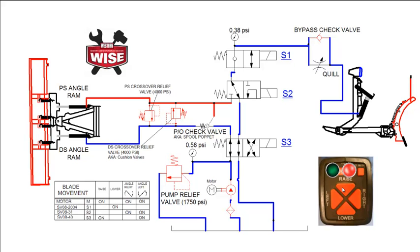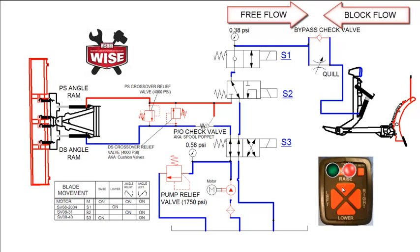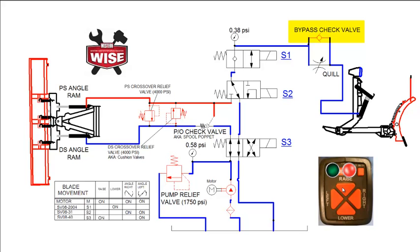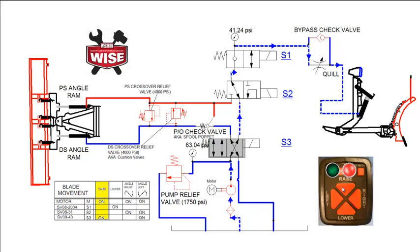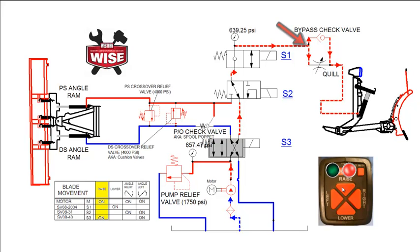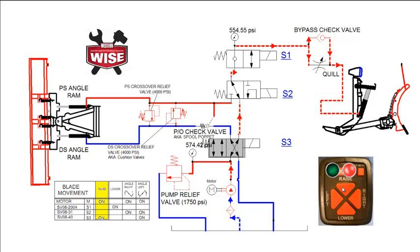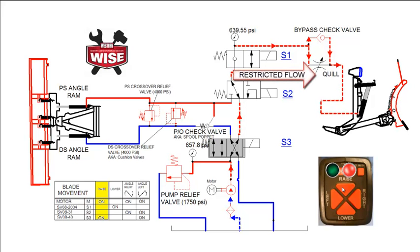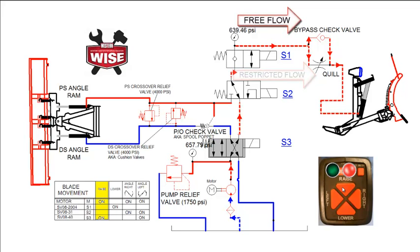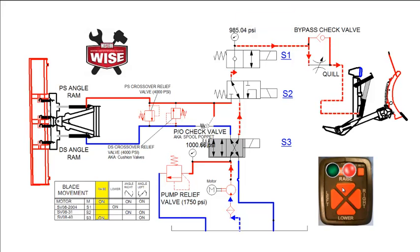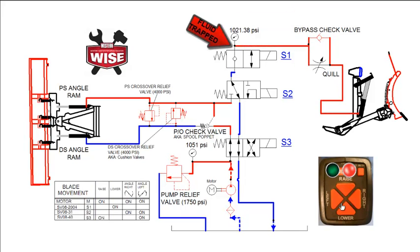Check valves are used to maintain the direction that fluid flows through a system. Typically, check valves allow free flow in one direction and block flow from the opposite direction. The bypass check valve is a component used in the raised lower circuit on ultramount straight blade plows. We will start by pushing the raised button on the snowplow control. Fluid moves through the shifted S3 cartridge through S2 and S1 cartridges to a junction point. At this point, the fluid takes the path of least resistance and rather than taking the potential higher resistance path through the quill, it pushes the ball off its seat on the bypass check valve on its way to the lift ram, raising the plow. Note that the S1 cartridge traps the high pressure fluid, keeping the blade raised.